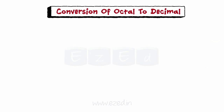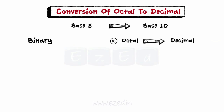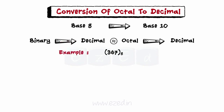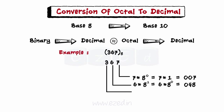For conversion of octal to decimal, that is from base 8 to base 10 — this is the same as binary to decimal conversion. To determine the value of an octal number, for example 367 in octal, we can expand the number using the positional weights in the same way.